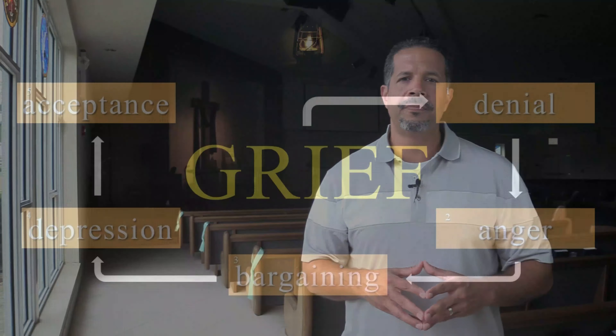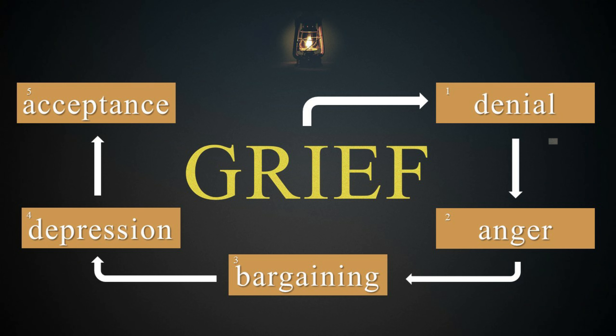It was the Swiss psychiatrist Elisabeth Kübler-Ross who came up with the five stages of grief back in 1969. She had been working with patients with terminal illnesses, and she discovered that there were five common characteristics among these individuals. The five stages of grief begin with denial, anger, bargaining, depression, and then finally, acceptance.